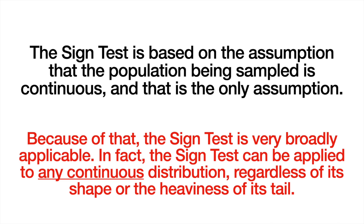The sign test makes minimal assumptions about the population we're sampling from — in fact, it makes almost no assumptions at all. For that reason, the sign test is very broadly applicable. We can apply it to almost any distribution, including skewed distributions and distributions that have high kurtosis, meaning very heavy tails.